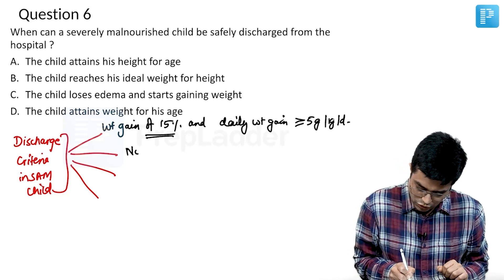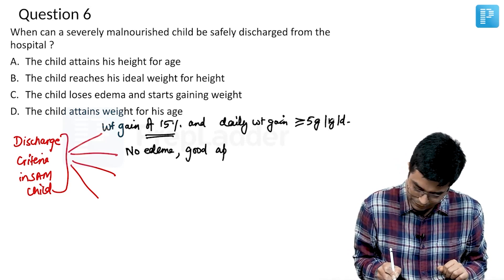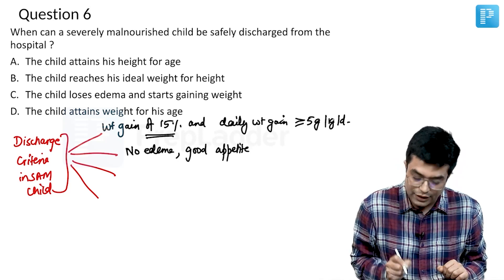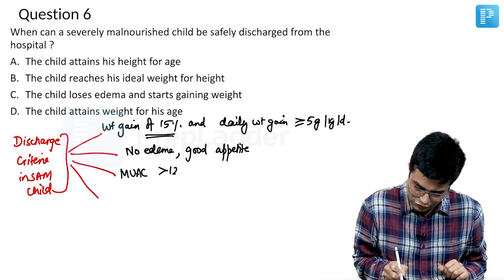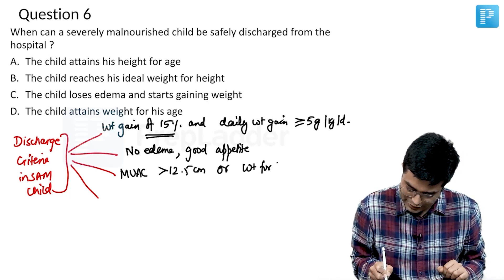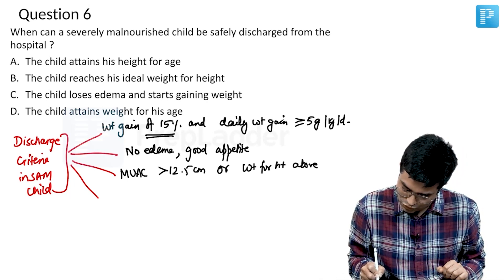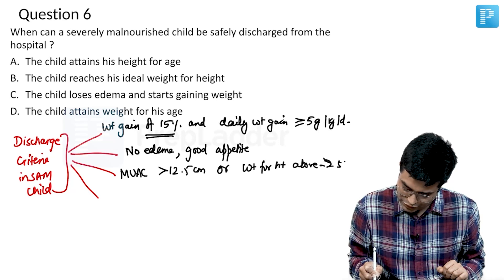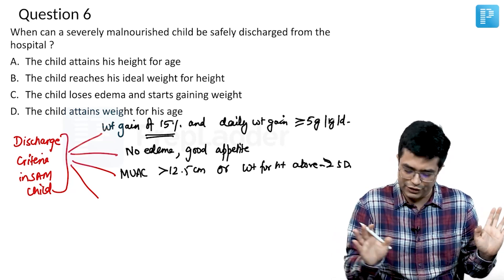Secondly, there should be no edema and child should have a good appetite. Thirdly, the mid upper arm circumference value should be above 12.5 centimeter or if you do a weight for height, it should be above minus 2 standard deviation. It should not be ideal, it should be above minus 2 standard deviation that is good enough.